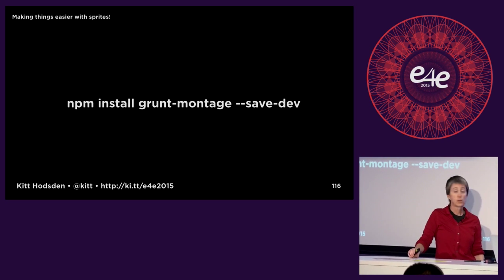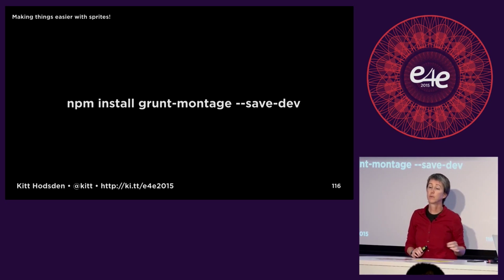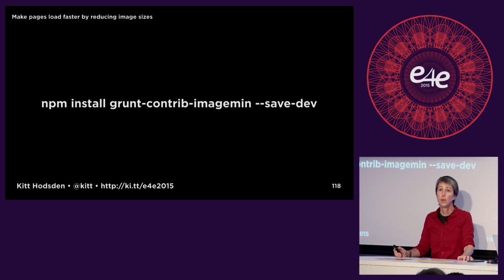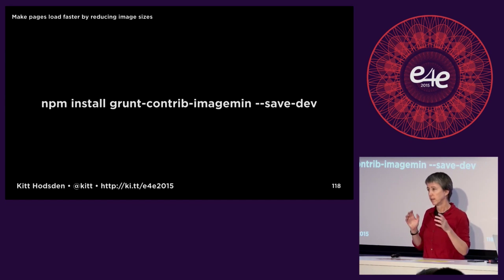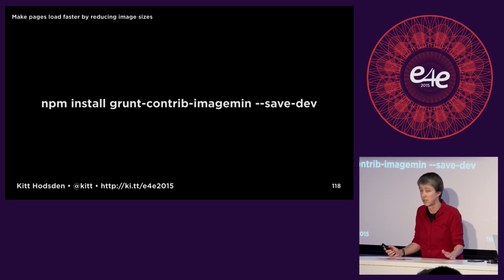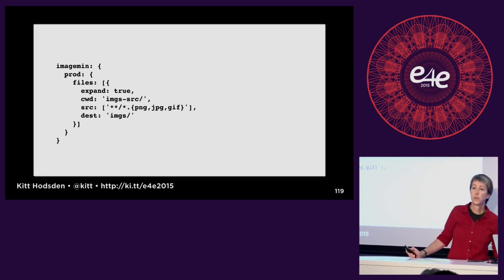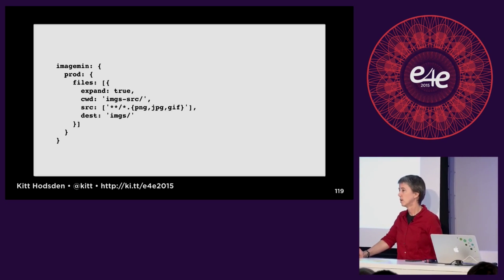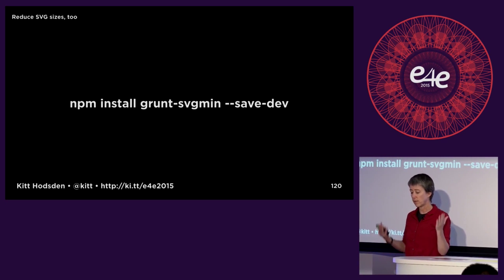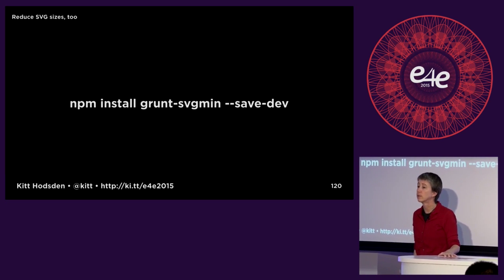Image min — imagemin. Every image has cruft in it. GIFs have lots of cruft. PNGs have extra header information. What imagemin does is reduce the file size without reducing the image quality, which is great — why send over bits that are never going to be used? You can usually run this just once; once the files are optimized, you're good. SVGs are also moving toward wider use, but editors put a lot of extra information into them. There's a tool to get rid of even that.